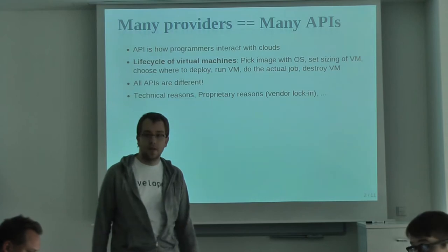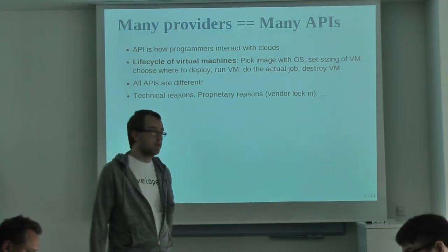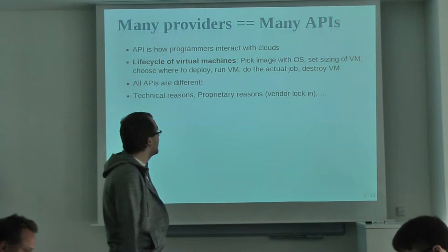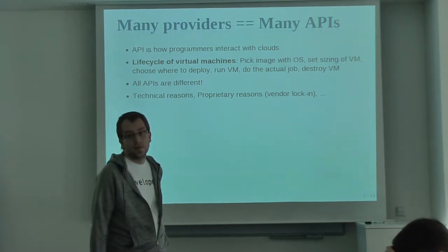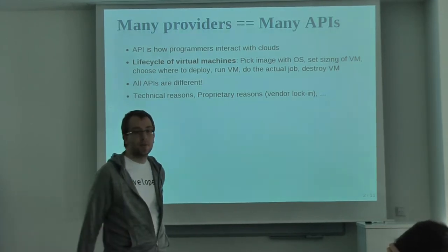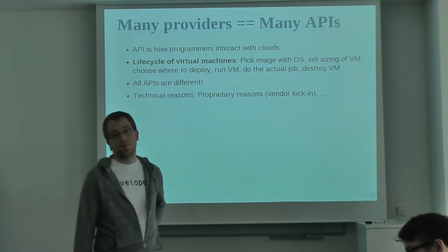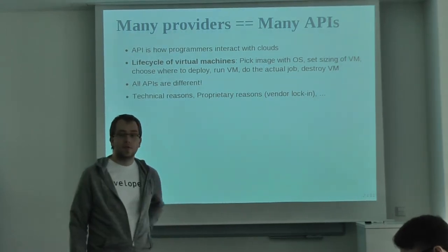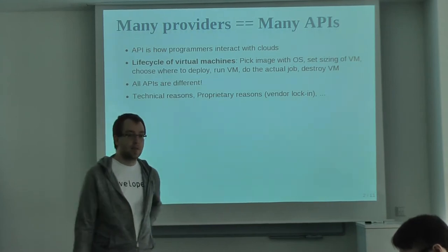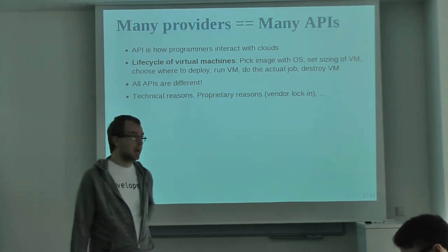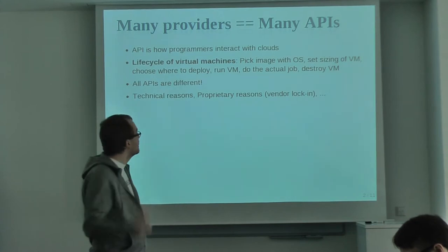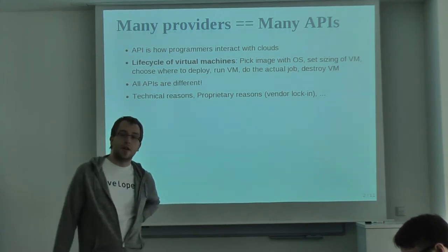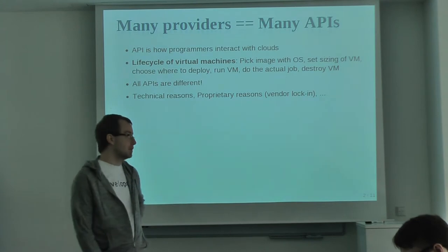Delta Cloud is a cloud provider abstraction API, so the API is how programmers usually interact with various cloud providers. If you are doing some application that uses the cloud, you usually speak with the cloud provider through their API. And surprisingly, all the APIs are different — every cloud provider has its own custom API.